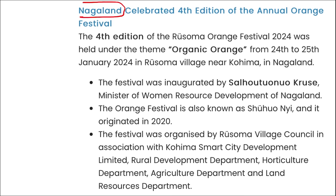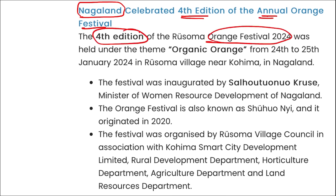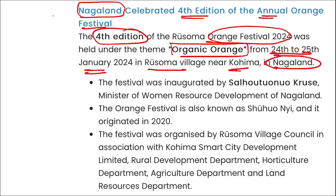Nagaland celebrated the fourth edition of its annual Orange Festival under the theme 'Organic Orange.' It was held from 24th to 25th January in Rusoma village near Kohima, Nagaland.